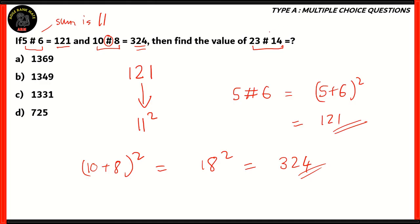Therefore, the symbol hashtag refers to the square of the sum of the two numbers being the right-hand side. That's what we're going to apply for 23 hashtag 14. So 23 hashtag 14 is 23 plus 14 the whole squared. Add 23 and 14, you get 37. And you need to find out the square of 37. You can do that by multiplying 37 with 37.